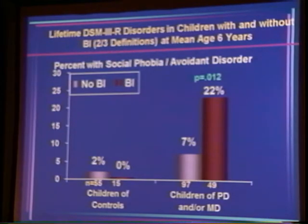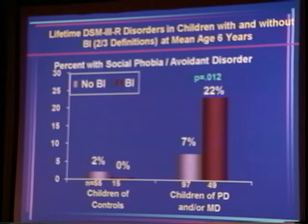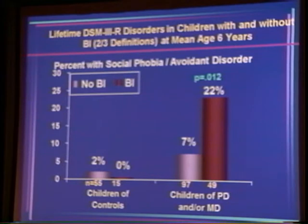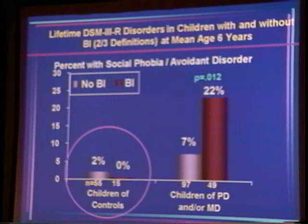Although this isn't a significant interaction, dividing children of controls from children of parents with panic and/or depression shows that all of the effect is in the offspring of parents with panic and depression — because there were 15 inhibited kids in the control group and they didn't have any social anxiety. That continues to make me wonder whether BI is really a risk factor in children of well parents.